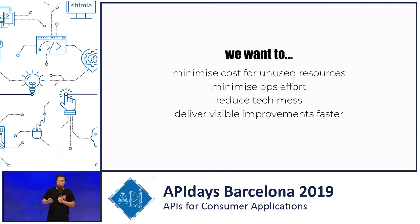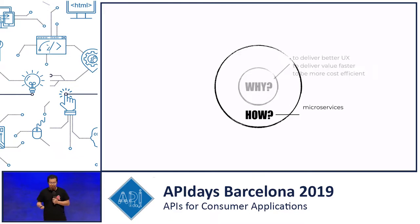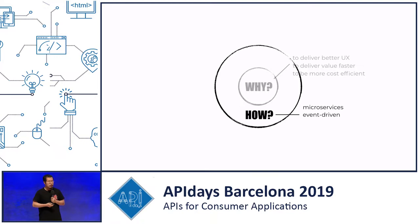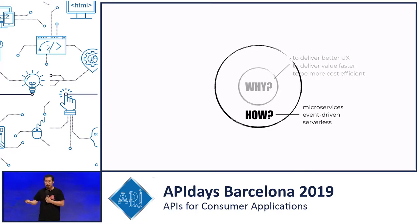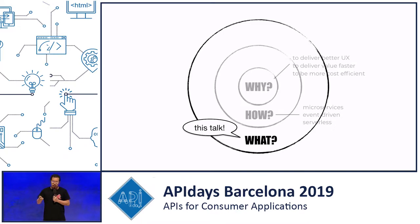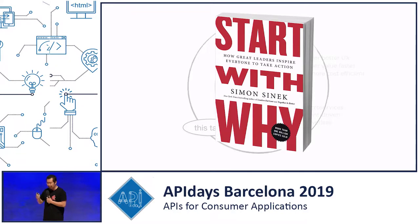Whilst we addressed technical issues from the current architecture, we also didn't want to take time out and not deliver anything. If anything, we wanted to deliver value to our customers faster than ever before. So the direction we decided on was moving towards microservices using event-driven architectures, and using serverless as the primary technology to build this new platform. And if that circle looks familiar, you've probably seen it from the Golden Circle by Simon Sinek in his book 'Start With Why.'